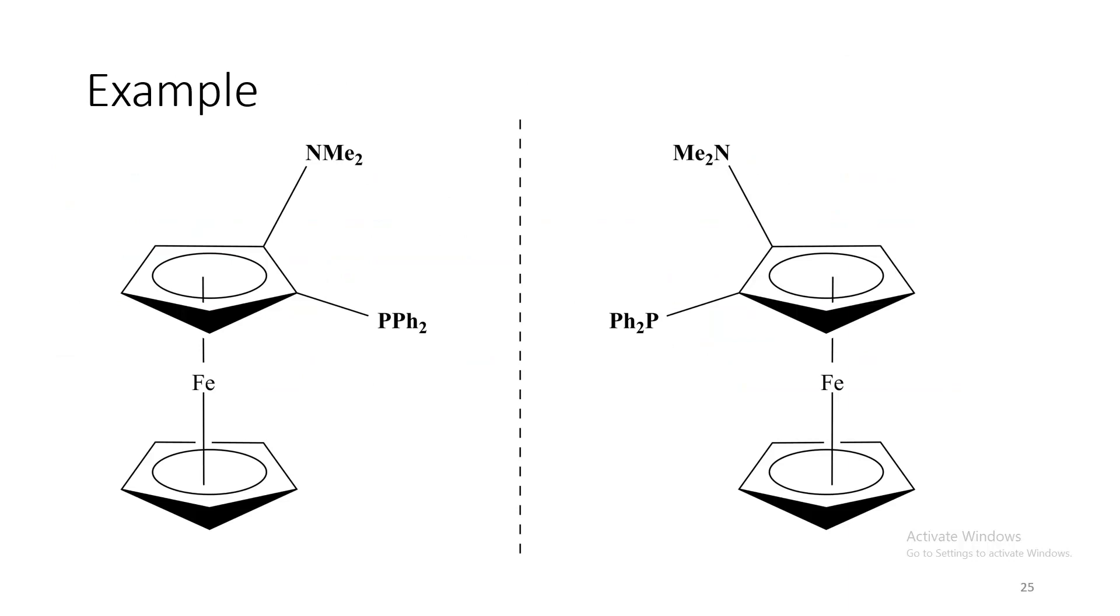Let us see the examples. First come to here. This phosphine is first priority and this amine is second priority and the shortest path is anticlockwise. So it is a Sp configuration. Now in this case, the shortest path is clockwise. So it is a Rp configuration.